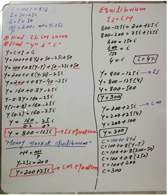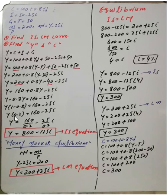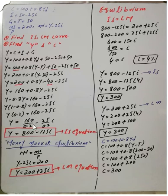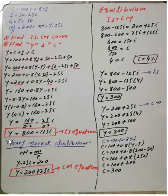Subtracting: 1 minus 0.8 gives 0.2. So we have 0.2Y equals 160 minus 25r. Dividing both sides by 0.2: Y equals 800 minus 125r. This is the IS equation, where 800 is the intercept and 125 is the slope coefficient on the interest rate.